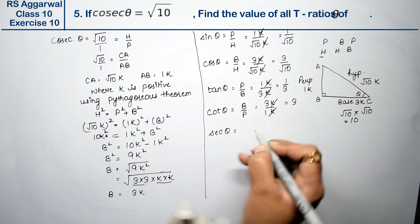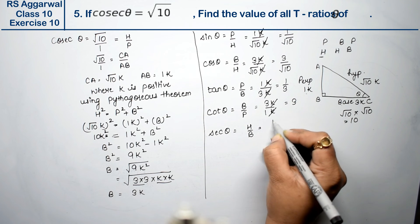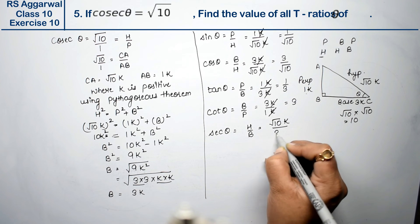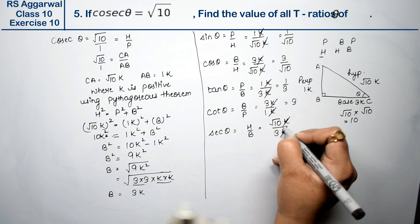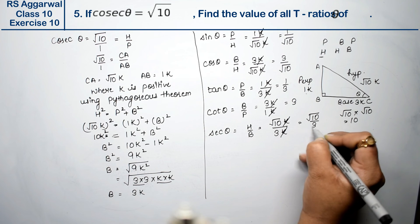Now sec theta. Sec theta is H upon B. Hypotenuse upon base. Hypotenuse is root 10k, base is 3k. K and k cancel. Root 10 upon 3.